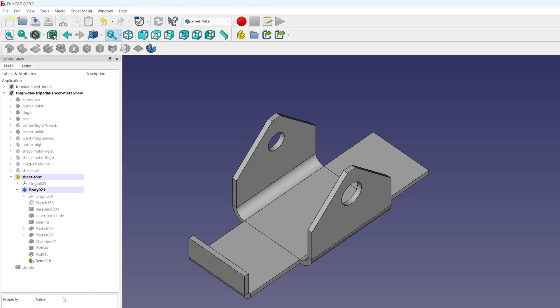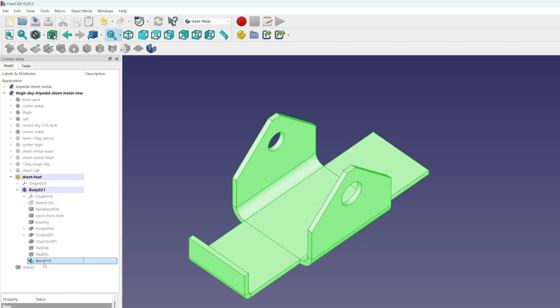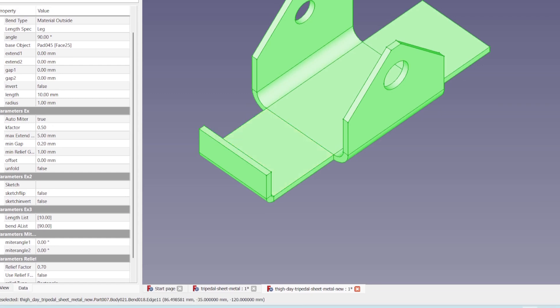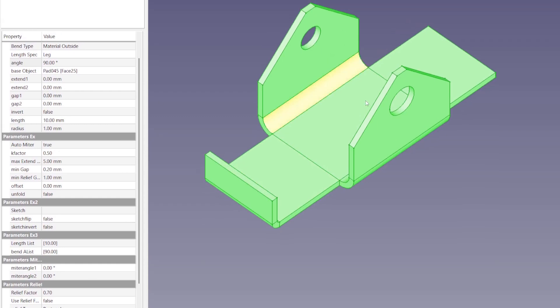In sheet metal, almost everything is a bend. Clicking bend creates a length on the face that is selected. It also makes the entire body green. We'll adjust the length because I want the new bend to meet up at the top of the foot.